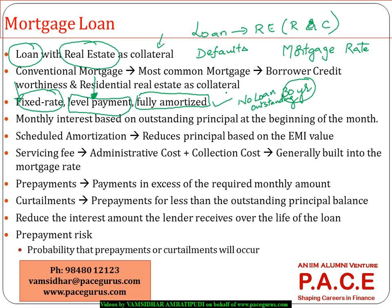When making equal repayments, there is some amount of principal and some amount of interest computed in the process. The allocation of the total repayment amount to the principal as well as the interest can be different for different periods. Let me take a small example to illustrate this.